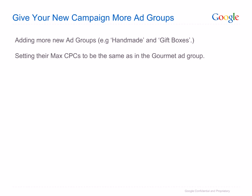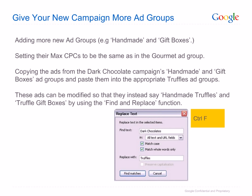In order to expand the campaign, in this example we add two new ad groups, Handmade and Gift Boxes. Their Max CPCs are set to be the same as in the Gourmet ad group. The ads are copied from the Dark Chocolate Campaign's Handmade and Gift Boxes ad groups and pasted into the appropriate Truffles ad groups. These ads can be modified so that they instead say Handmade Truffles and Truffle Gift Boxes. Use Find and Replace by pressing Ctrl F. The same operation can be conducted with keywords.